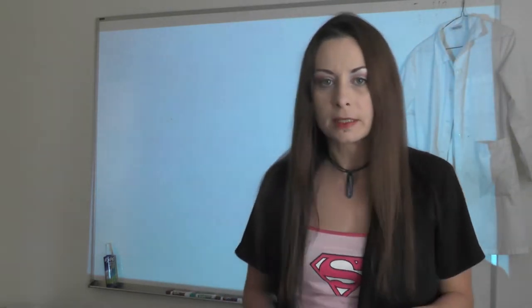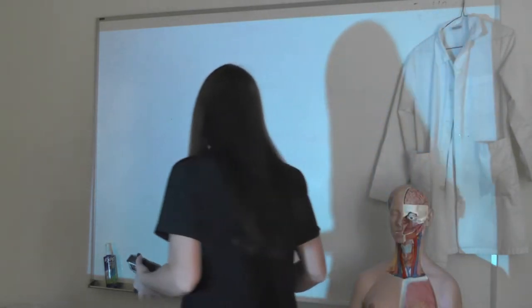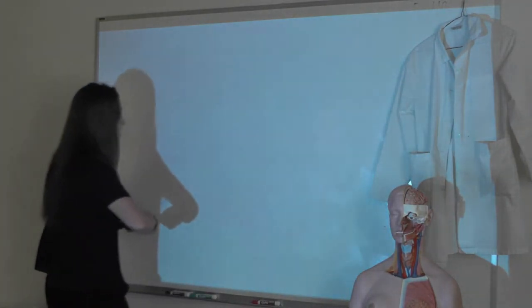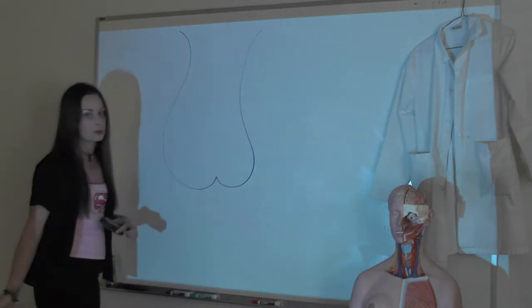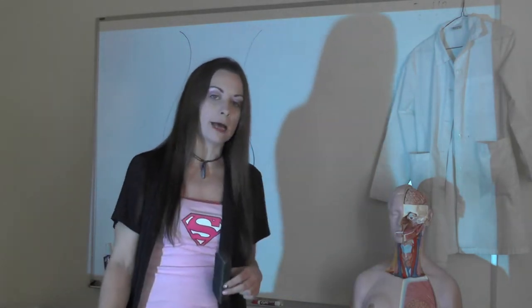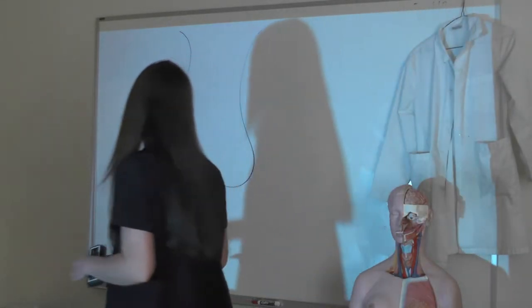We talked last time about the male reproductive system, so let's do a quick recap of the important parts. Both reproductive systems are controlled by the hypothalamo-pituitary-gonadal axis, or the HPG axis.